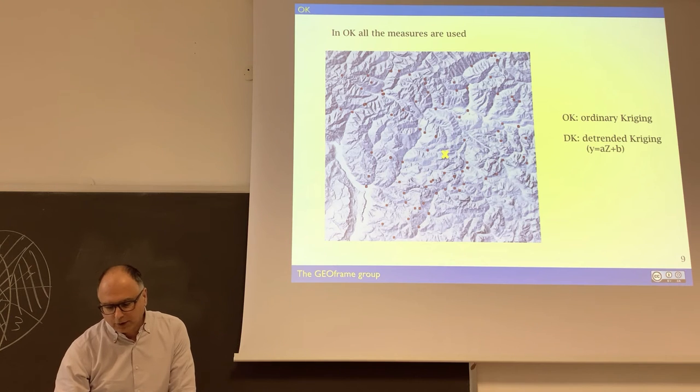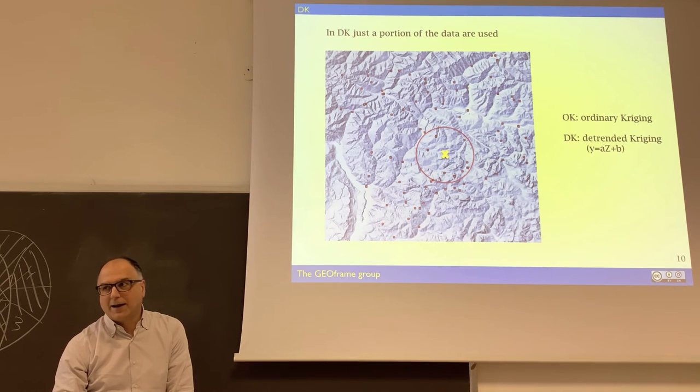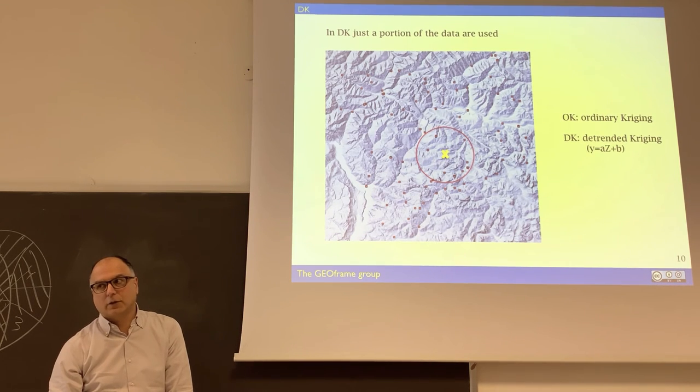In the ordinary kriging, all the measures are used. In the decay, just a portion. In the circle, for instance, obviously you can vary the extension of the circle.